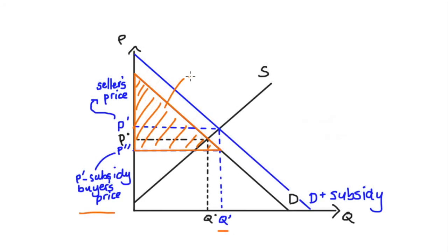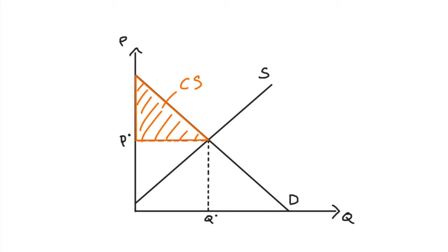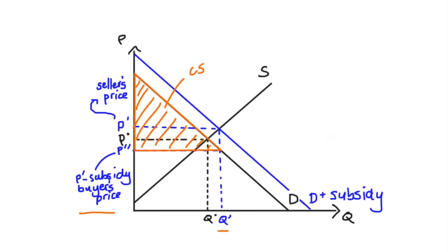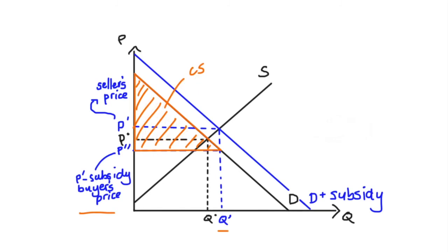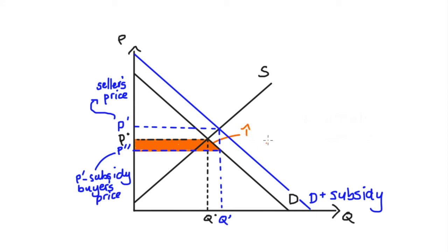Let's go back to our initial consumer surplus shading before the subsidy, and then switch back to after the subsidy to think about how it's changed. Our consumer surplus has increased by this amount — and that's not unexpected. As a result of the subsidy, consumers get their unit for less than before and they're consuming more, so consumer surplus has increased.